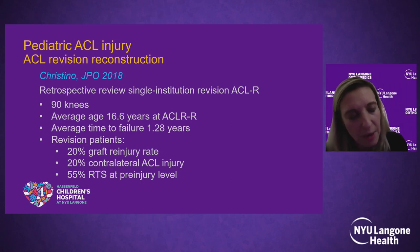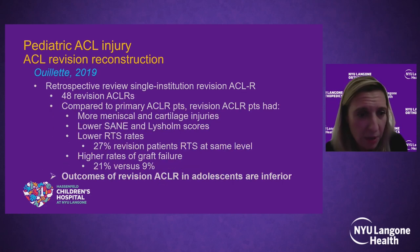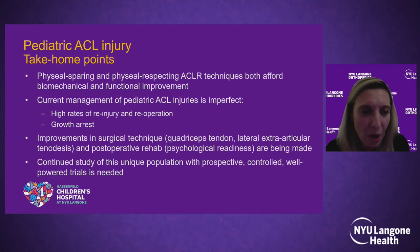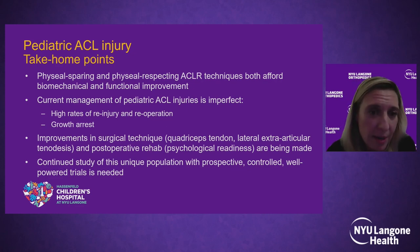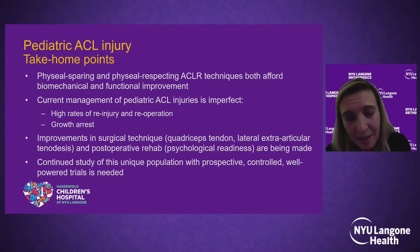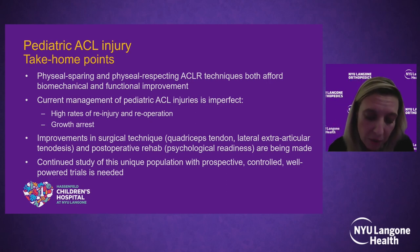Looking at revision ACL reconstruction outcomes in kids, recent papers show a 20% graft re-injury rate, 20% contralateral ACL injury, and 55% return to sports at Boston Children's Experience. In San Diego, only 27% of revision adolescent patients return to sport at the same level, and 21% have re-rupture of their graft. In summary, physeal-sparing and physeal-respecting ACL reconstruction techniques both provide biomechanical and functional improvement, but our current management is imperfect given high rates of re-injury, re-operation, and growth arrests. Improvements using quad tendon, LET, and systematic postoperative rehabilitation are being made, but continued good-quality study of this population is needed to achieve better outcomes.